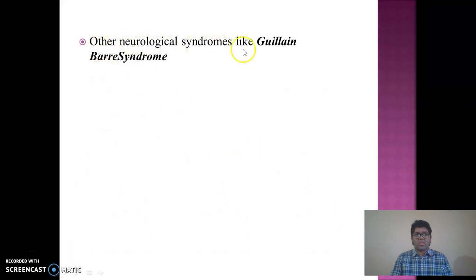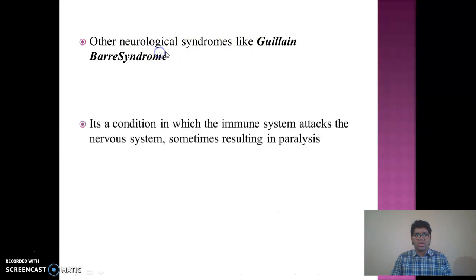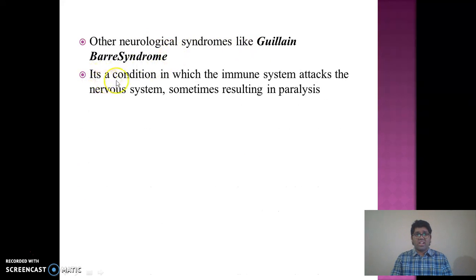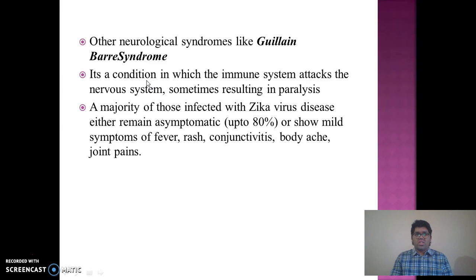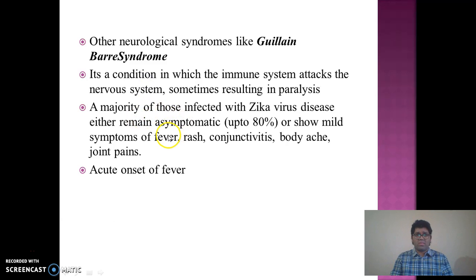Other neurological syndromes include Guillain-Barré syndrome, a condition in which the immune system attacks the nervous system, sometimes resulting in paralysis. A majority of those infected with Zika virus either remain asymptomatic — up to 80% — or show mild symptoms of fever, rash, conjunctivitis, body ache, and joint pains.